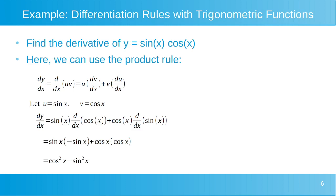Here's an example of using the differentiation rules with trigonometric functions. We want to find the derivative of y equals sin x cos x, and we can use the product rule. Our derivative dy/dx is equal to the derivative of u times v with respect to x. Using the product rule, the derivative equals u multiplied by dv/dx, plus v multiplied by du/dx. We let u equal sin x and v equal cos x. So dy/dx equals sin x multiplied by the derivative of cos x with respect to x, plus cos x multiplied by the derivative of sin x with respect to x.